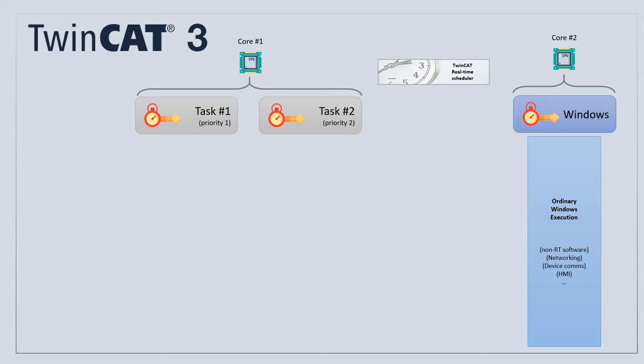Now we have our task and isolated core, so we should be able to run our software. Let's close the System module and go to the PLC module. In the POUs, TwinCAT by default creates a main program, and this main program is referenced by the PLC task. The PLC task's real-time properties are defined in the real-time settings — our PLC task runs every 10 milliseconds, running on the fourth core in our CPU, which is isolated, giving this task 100% access to that physical core.